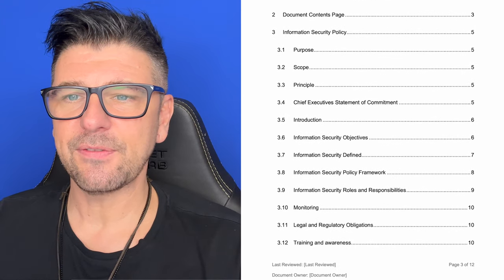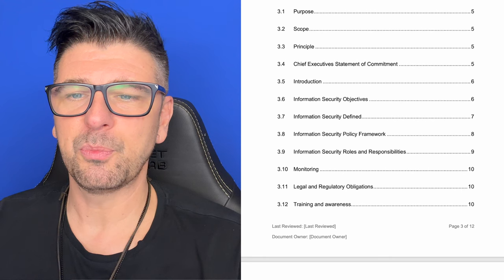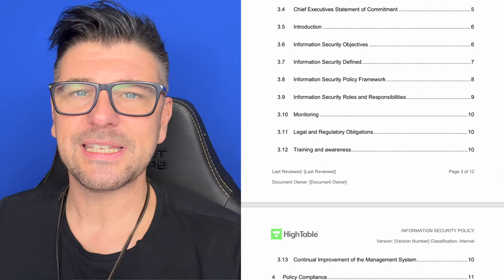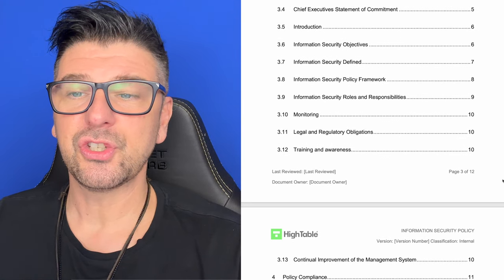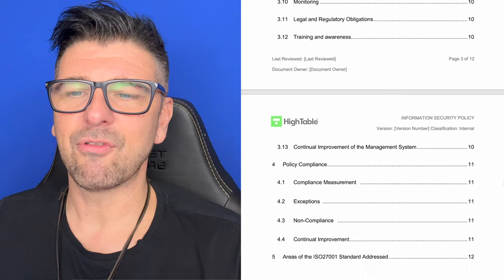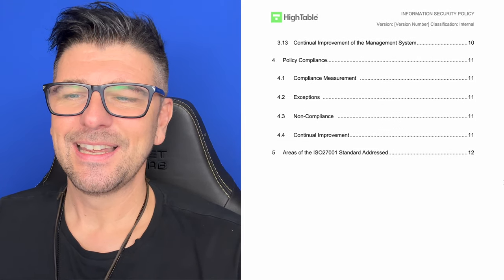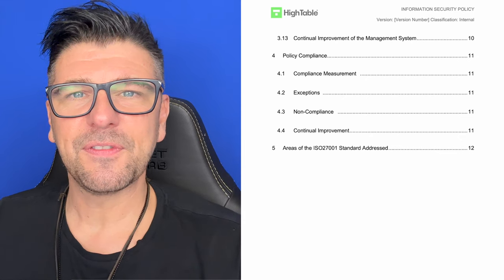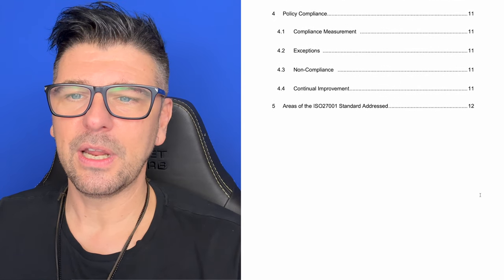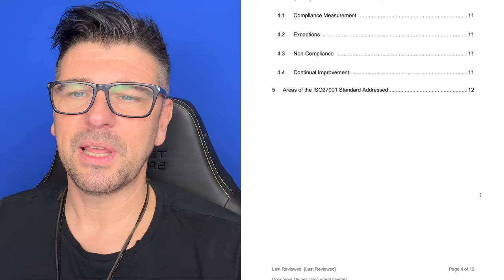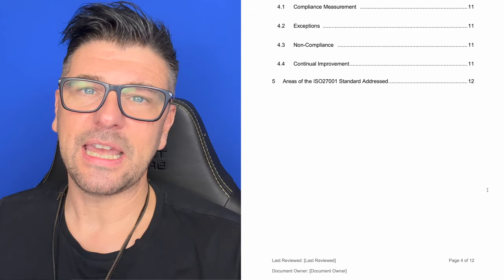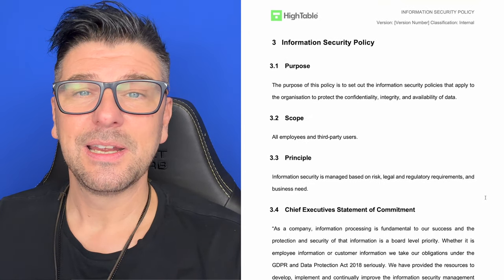The information security policy itself is going to cover a number of areas: purpose, scope, principle. We're going to introduce the concept of a chief exec statement, introduction. We're going to look at objectives, information security defined, and information security policy framework. We're going to have information security roles and responsibilities, monitoring, legal and regulatory obligations, training and awareness, and continual improvement. Every policy has on it version control, document classification, last reviewed date, and document owner, and every policy also has a mapping to the standard clauses and Annex A controls to which it may apply.